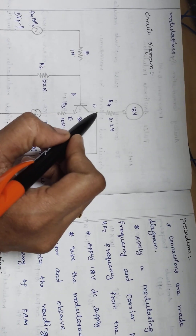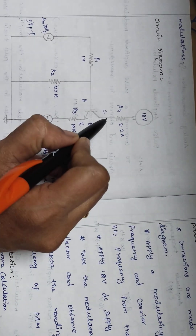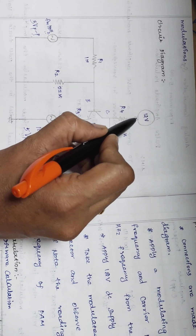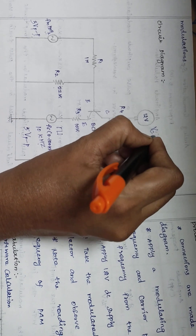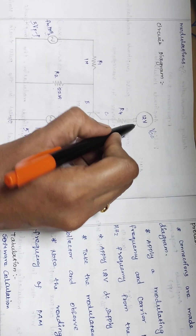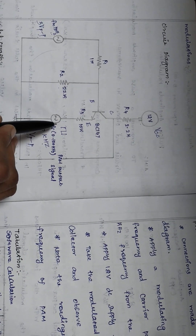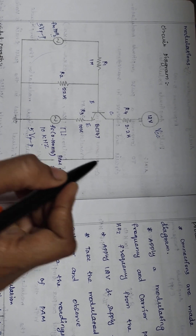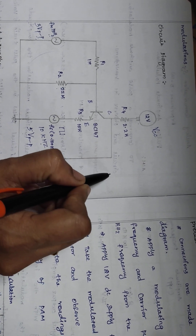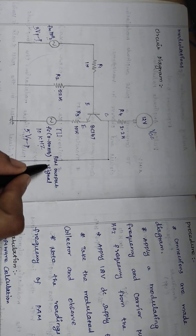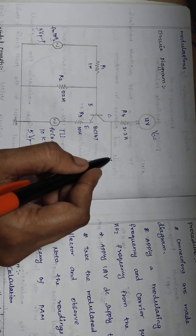The collector resistance is 2.2 kilo ohms, connected between the collector terminal and VCC. VCC is taken around 12 volt. This is the general circuit for pulse amplitude modulation. The output is taken at the collector terminal between the collector terminal and the ground — that is the PAM output.